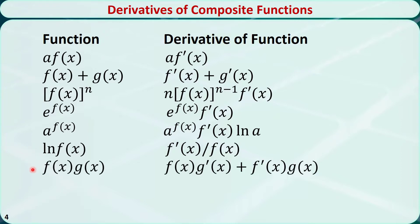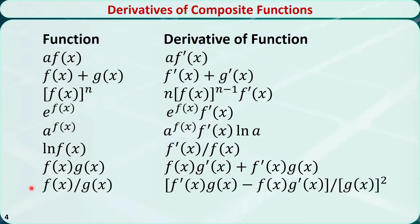The derivative of f(x) times g(x) is f(x) times the derivative of g(x) plus the derivative of f(x) times g(x). The derivative of f(x) over g(x) is the derivative of f(x) times g(x) minus f(x) times the derivative of g(x), all over g(x) squared.